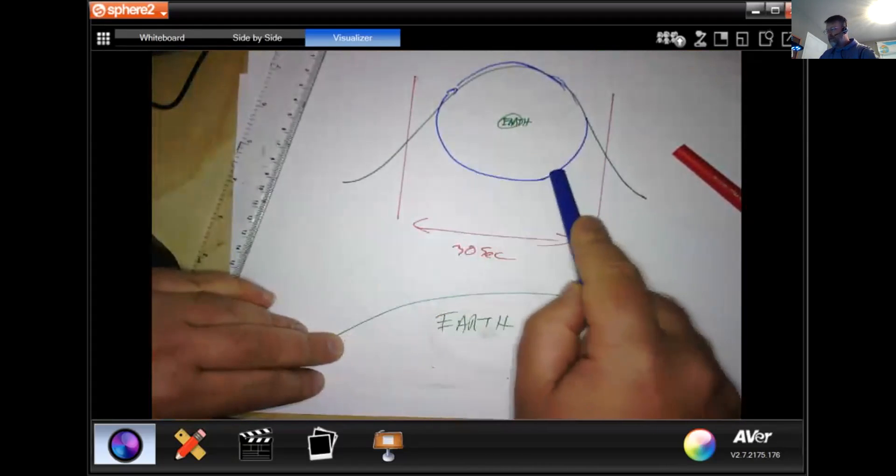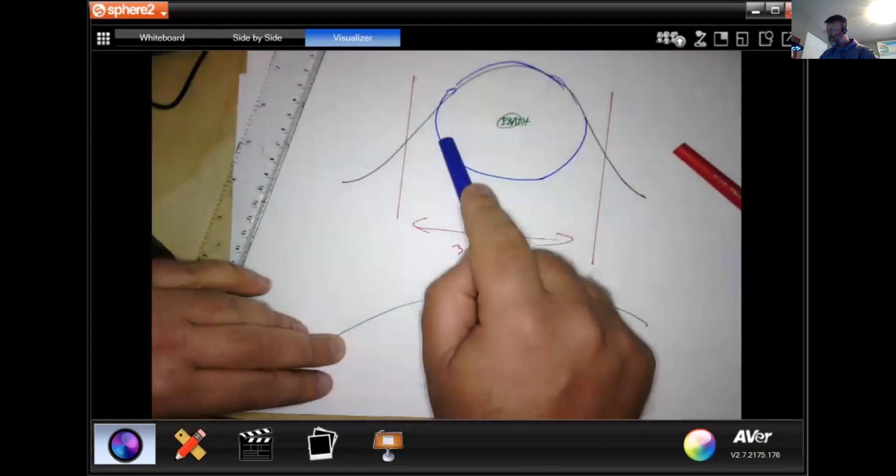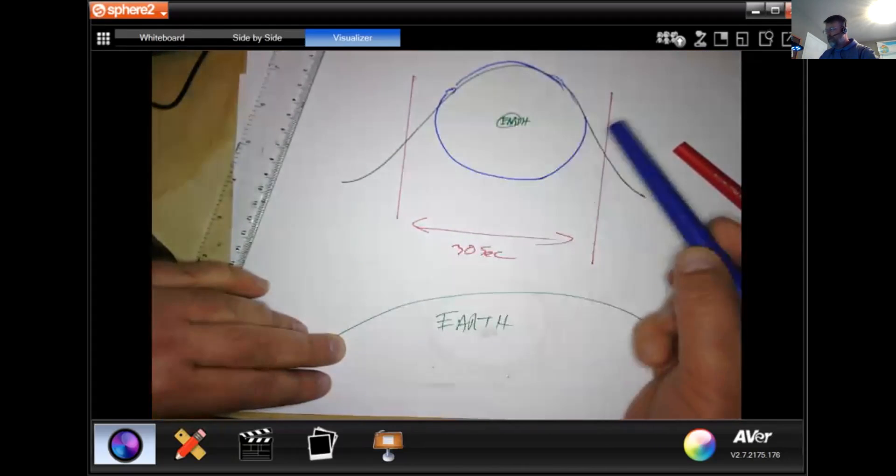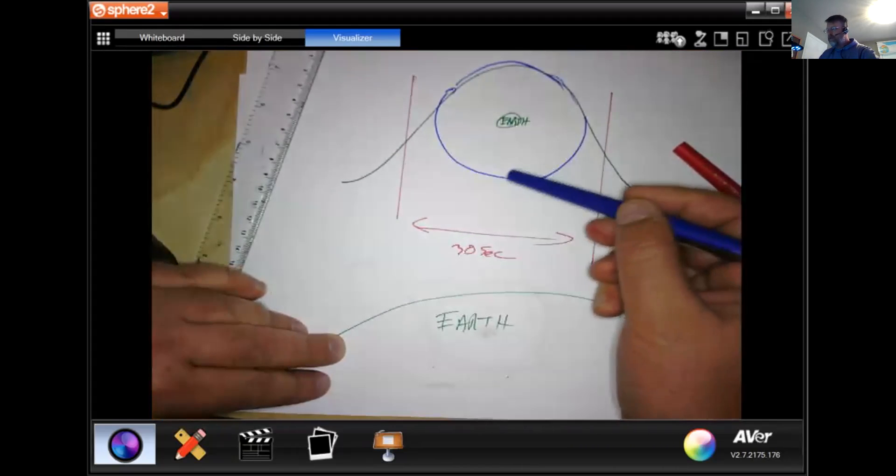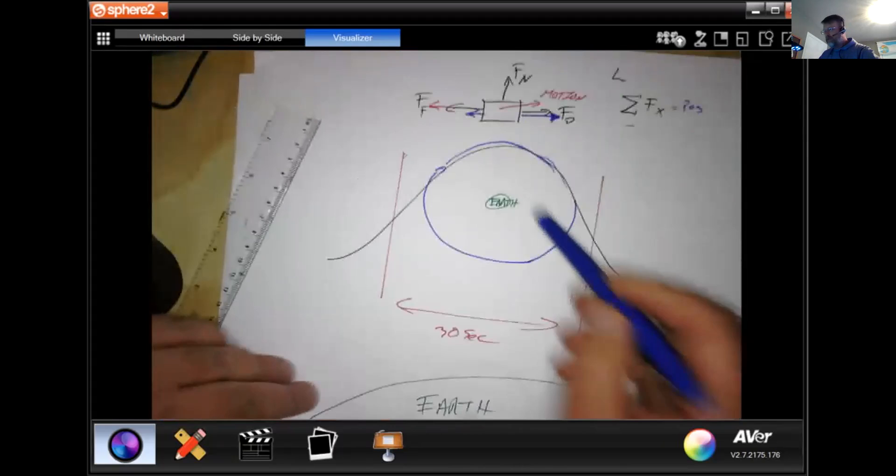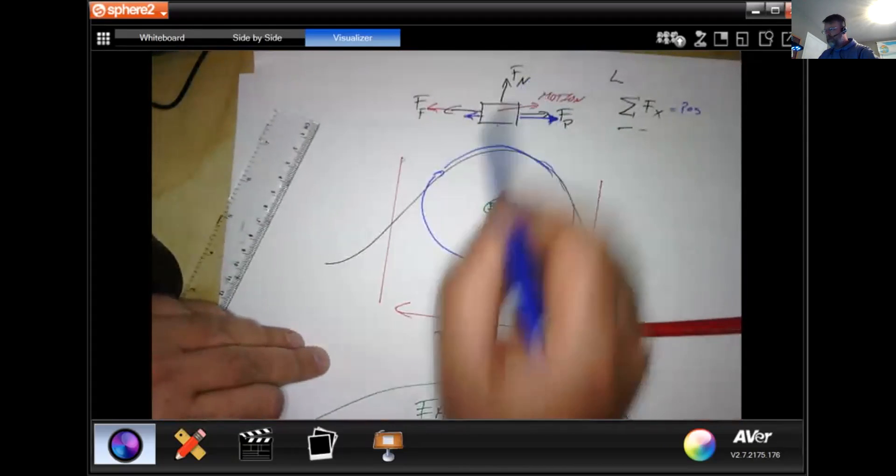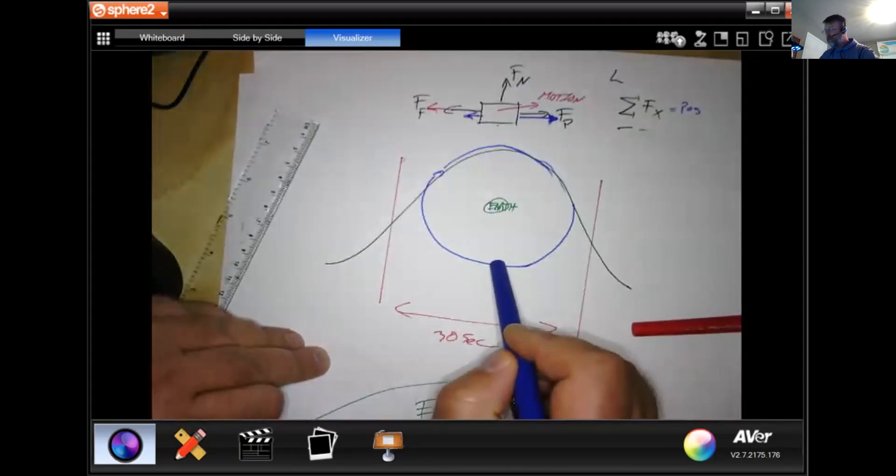So they keep falling, but the International Space Station keeps falling and their lunch keeps falling and whatever experiments they're working on keeps falling and the toilet keeps falling and everything in there keeps falling. So they do not experience the gravitational force because they don't experience any normal force pushing back up, okay, because everything's falling at the same rate. Okay, and so with that reference frame things change.